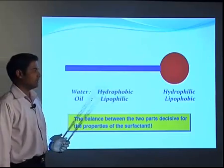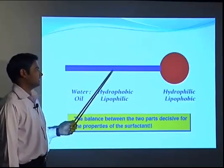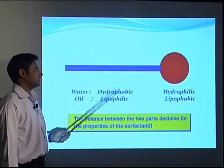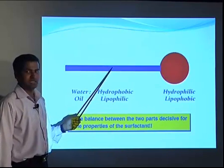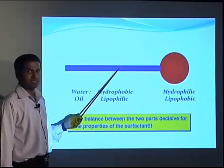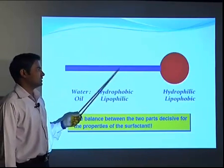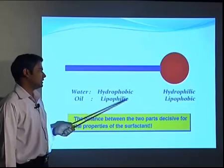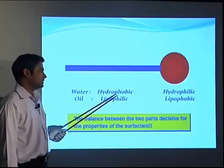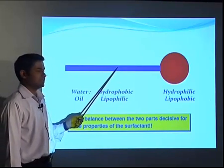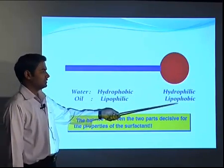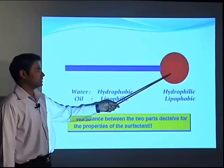If you look at a surfactant or detergent molecule, you can find a group which is hydrophobic, generally called lipophilic. This is the fatty group, which may be straight or branched chain — mainly a carbonaceous compound with more than C8 or C12 carbons. This is referred to as the fatty group, which is hydrophobic (water-hating) or lipophilic (lipid-loving). This group is generally termed the tail, and the hydrophilic group is termed the head group.